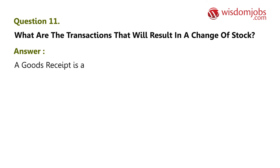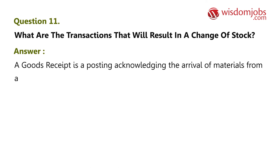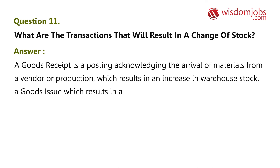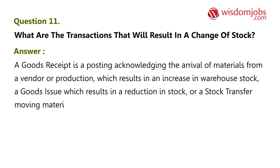Question 11: What are the transactions that will result in a change of stock? Answer: A goods receipt is a posting acknowledging the arrival of materials from a vendor or production, which results in an increase in warehouse stock. A goods issue results in a reduction in stock. A stock transfer moves materials from one location to another.